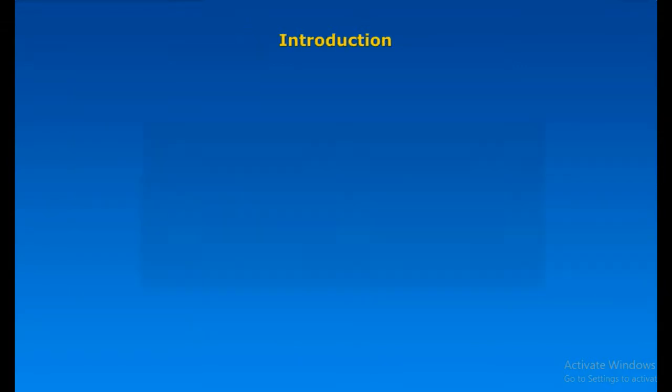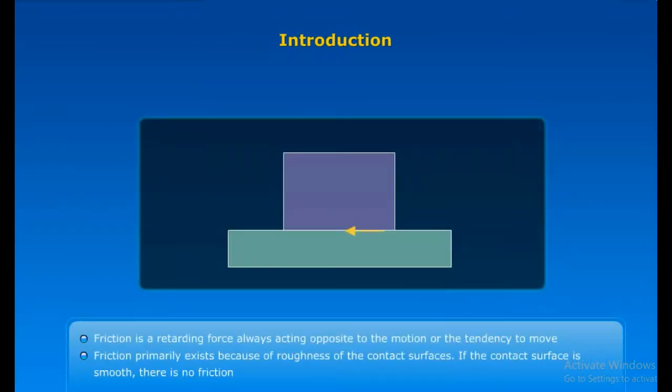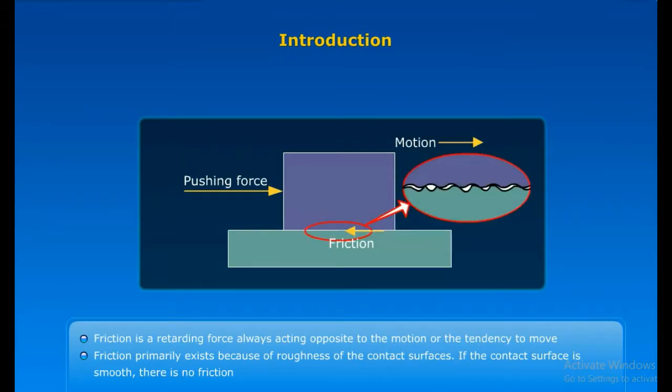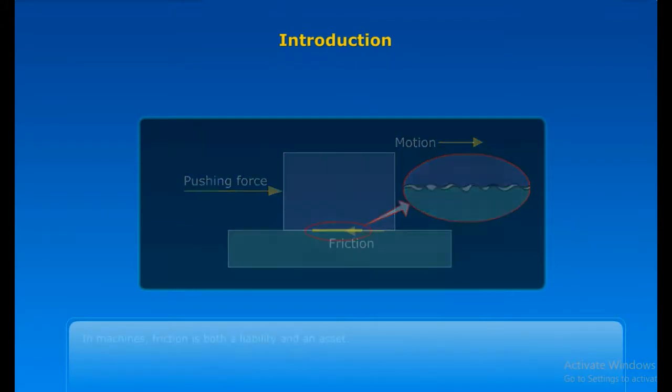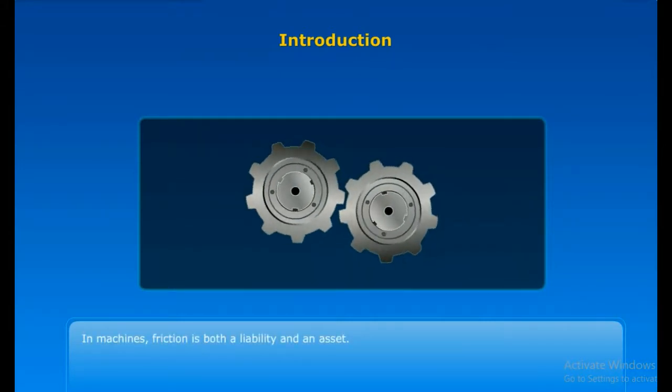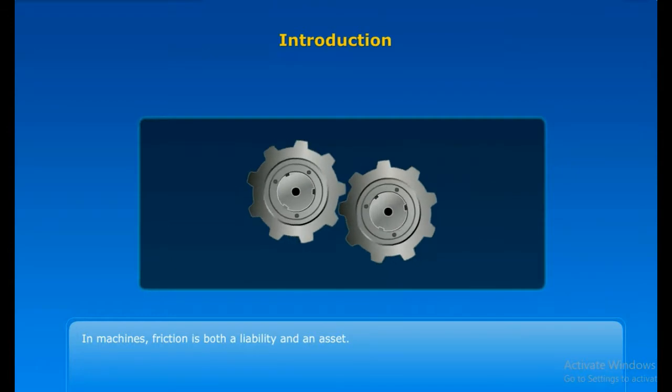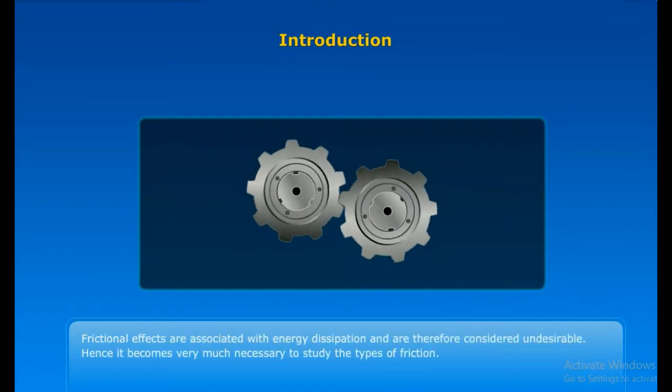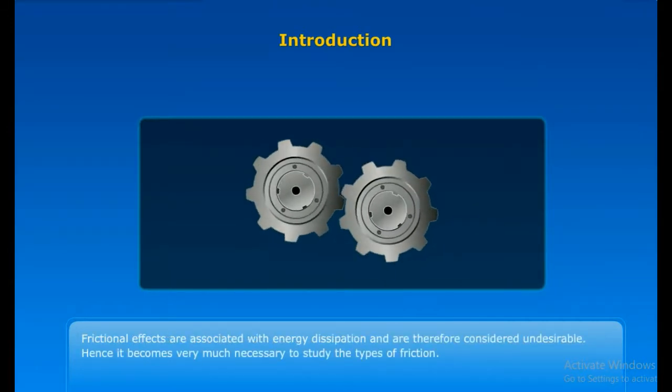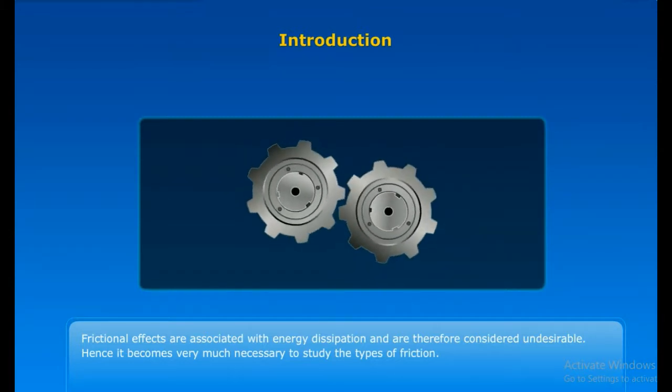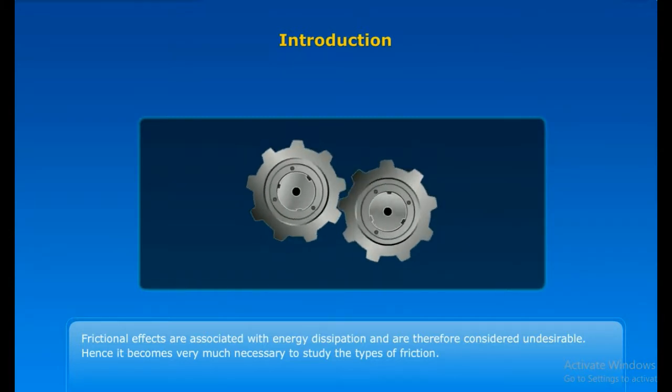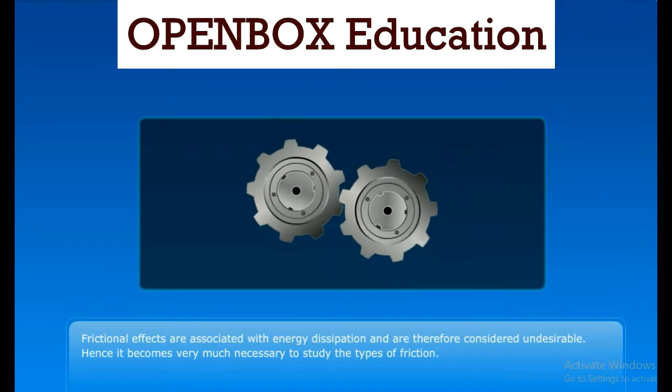Introduction to Friction. Friction is a retarding force always acting opposite to the motion or the tendency to move. Friction primarily exists because of the roughness of the contact surfaces. If the contact surface is smooth, there is no friction. In machines, friction is both a liability and an asset. Frictional effects are associated with energy dissipation and are therefore considered undesirable. Hence, it becomes very much necessary to study the types of friction.